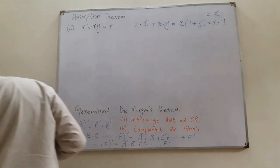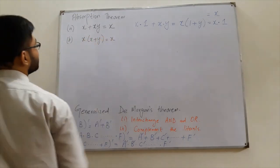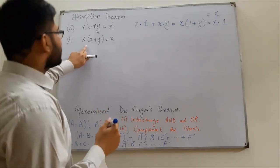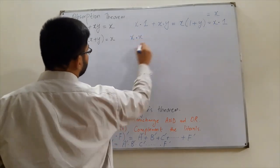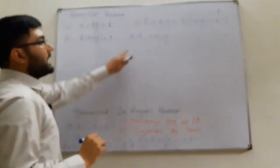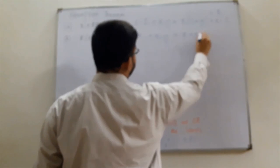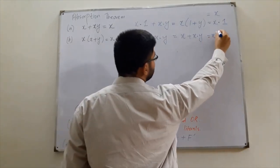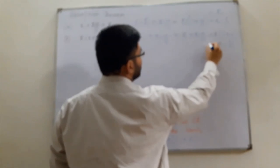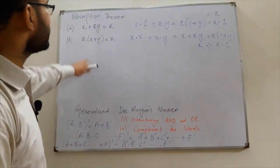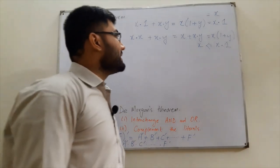Part B: x·(x + y) = x. Using the distributive property: x·(x + y) = x·x + x·y. Since anything AND'd with itself is itself, x·x = x, giving x + x·y. Taking x common: x·(1 + y) = x·1 = x. Both forms of the absorption theorem are proved: x + xy = x and x·(x + y) = x.